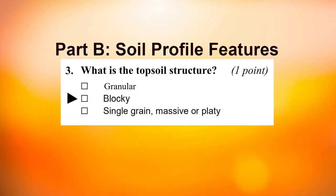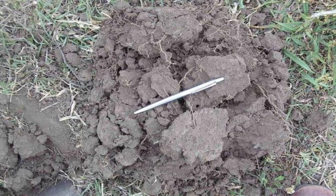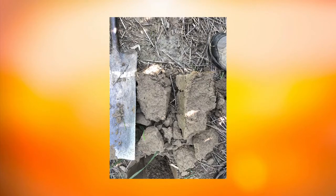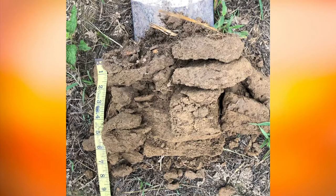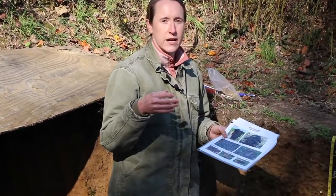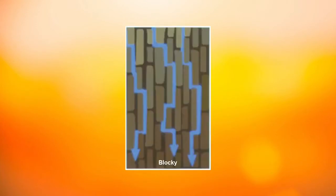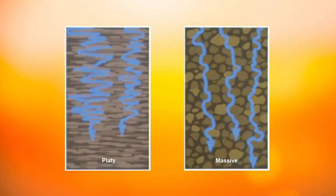Blocky aggregates can be rounded or more angular. The final option is single grain, massive, or platy. Single grain is when the aggregates don't hold together at all — just single particles. Massive is when aggregates don't form any regular shapes; large clods break wherever you force them with no regular pattern. Platy is when aggregates are all oriented horizontally, like plates. Structure matters because it helps us understand how roots and water move through the soil. Granular structure has lots of pore space — easy for roots and water. Blocky may restrict roots to around the aggregates. Platy or massive can make it hard for roots and water to move downward.